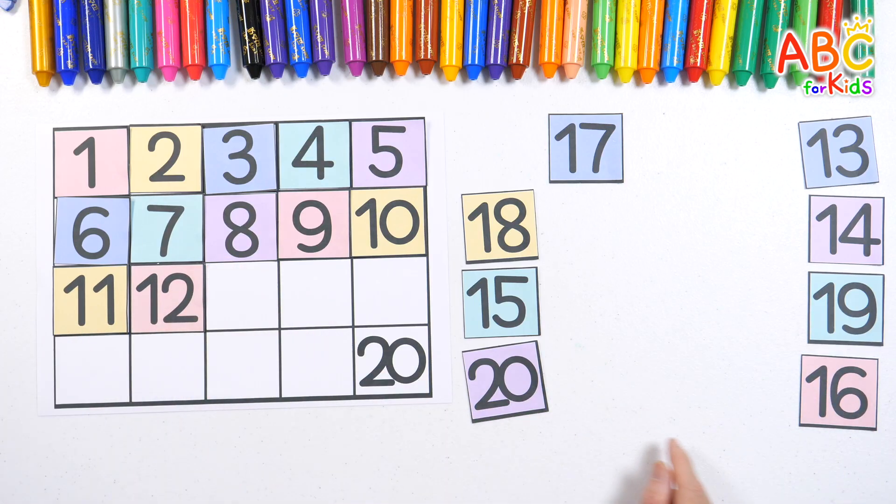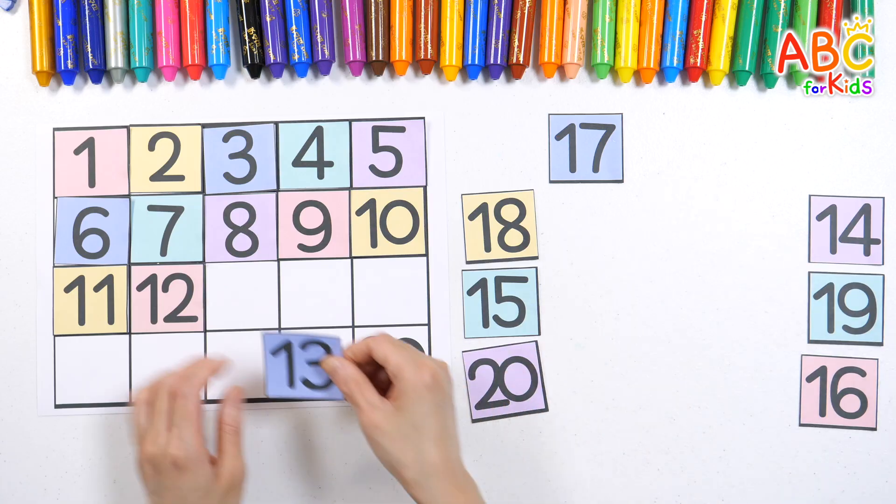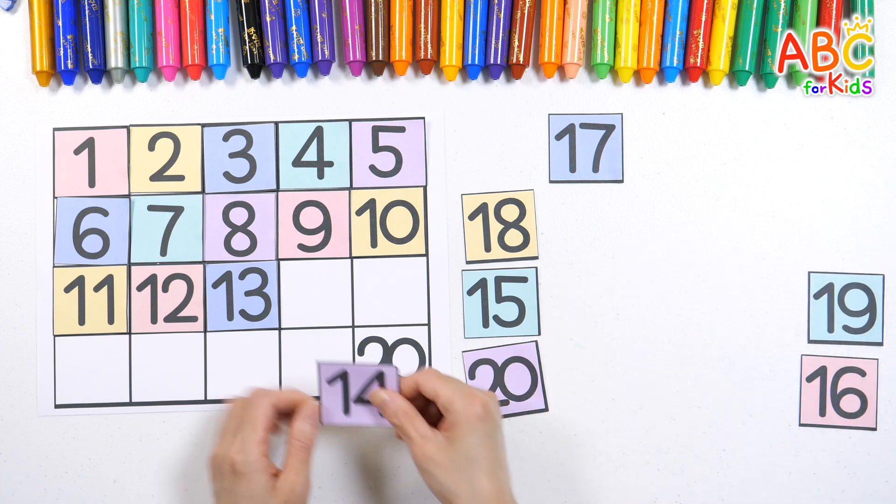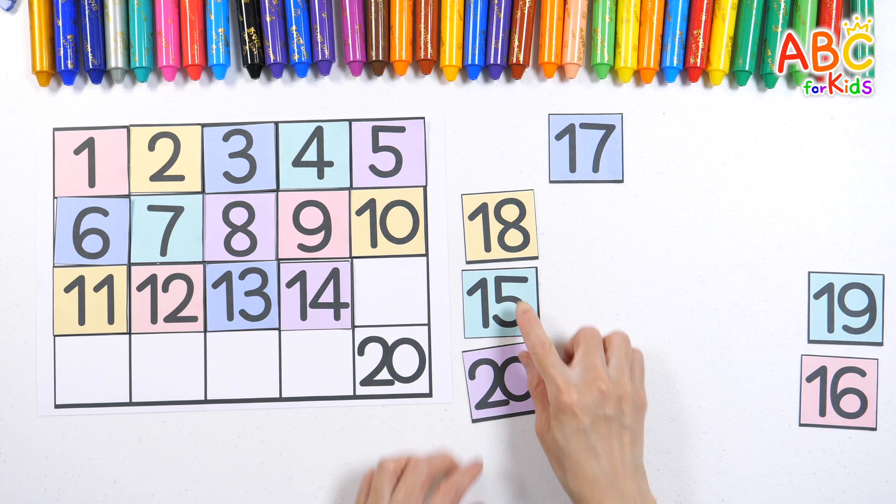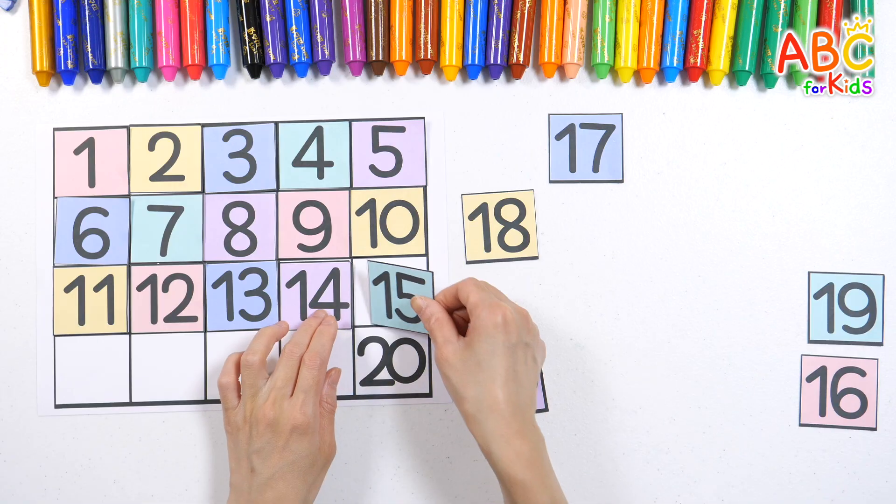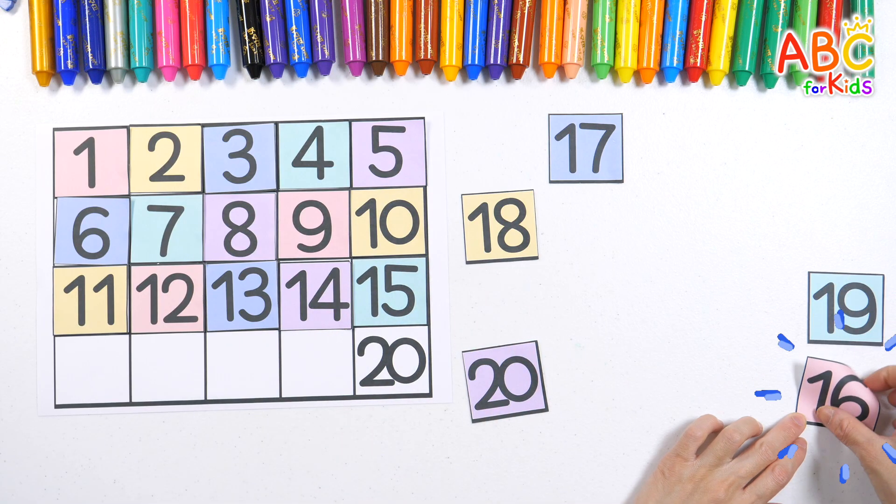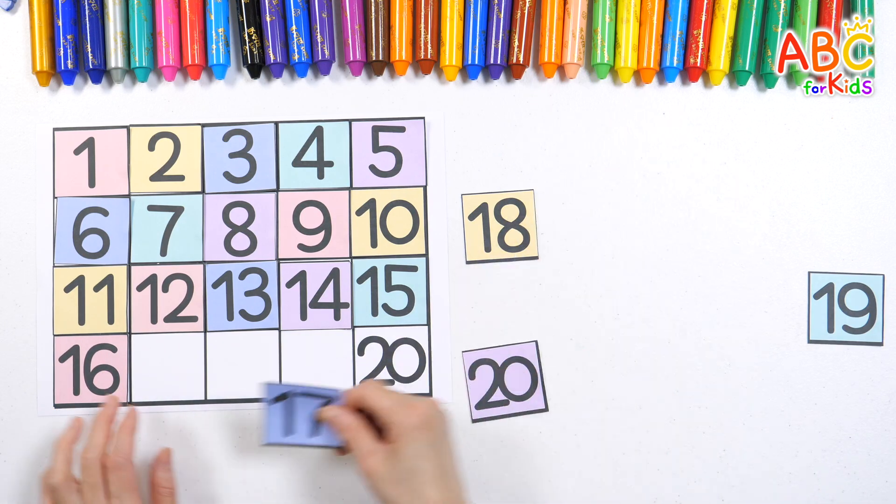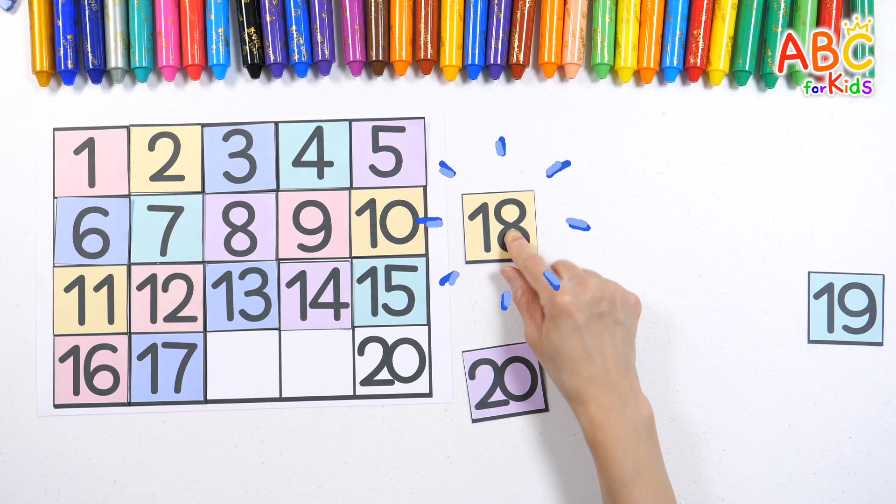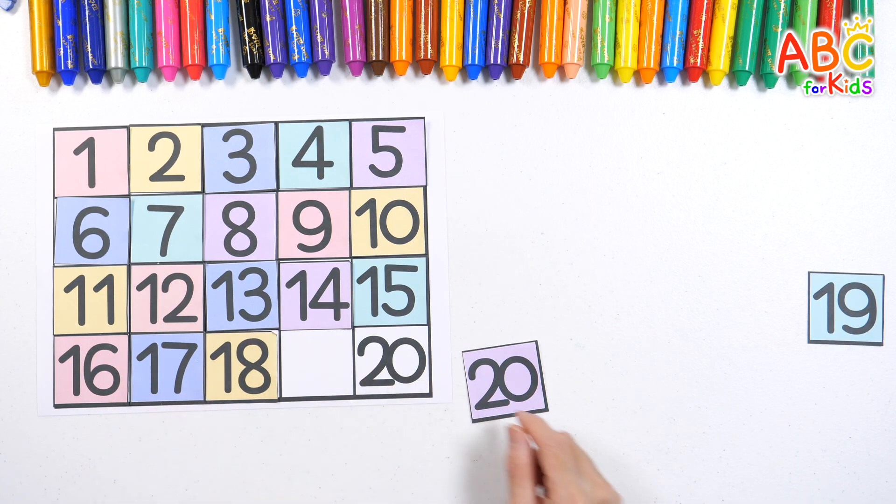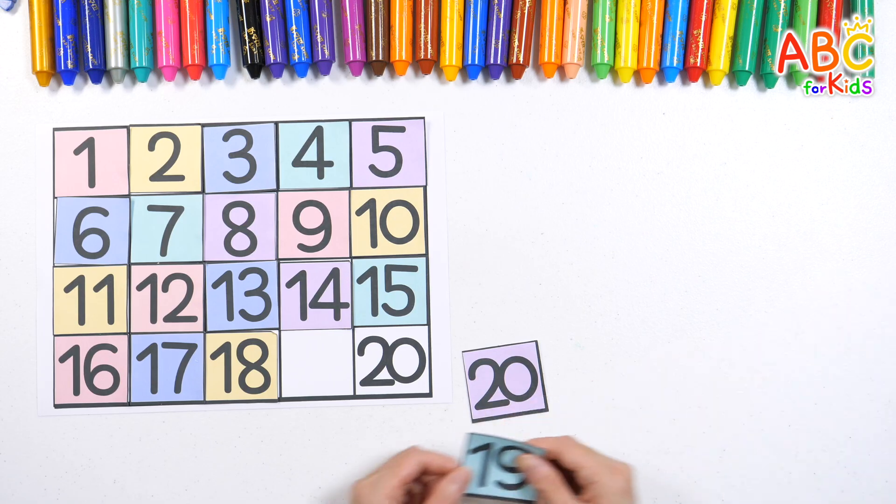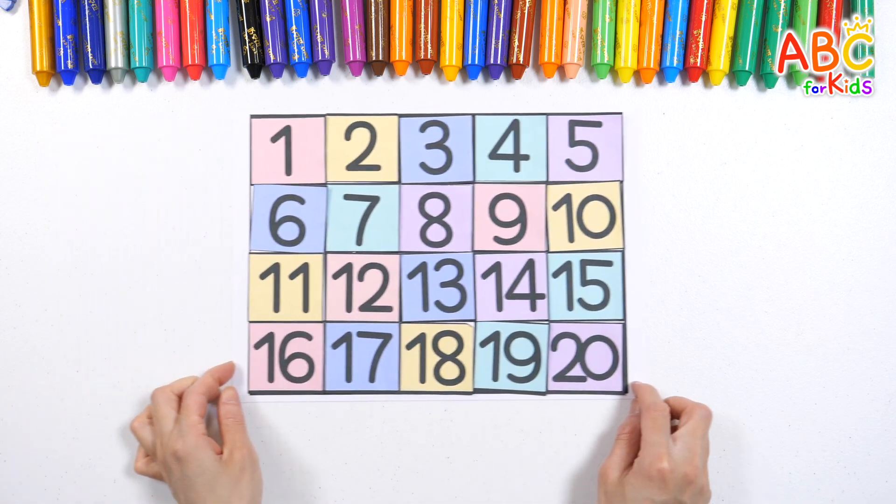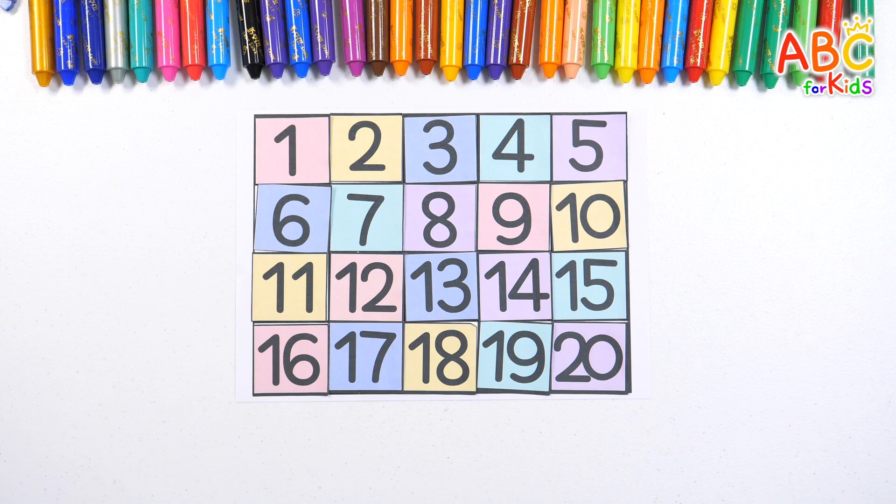And 12, 13. Putting numbers in order isn't too hard. 14, 15. Follow along slowly. 16, 17, 18, 19, 20. All the numbers from 1 to 20 are in order.